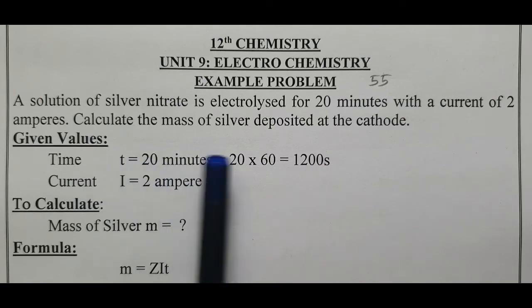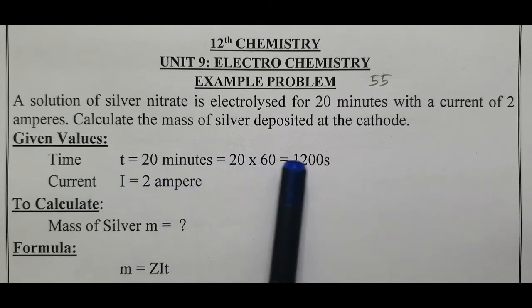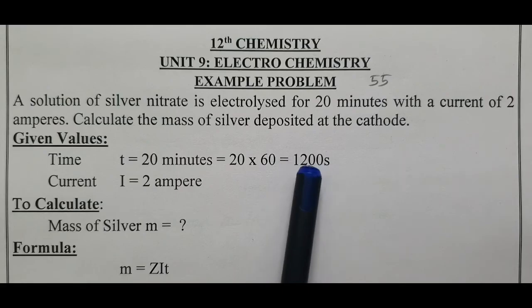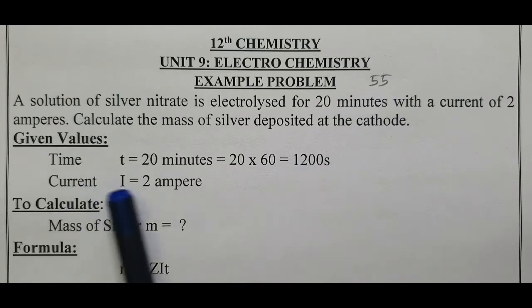The given values are time t = 20 minutes. To convert minutes into seconds, 20 times 60 equals 1200 seconds. Current i is 2 ampere.